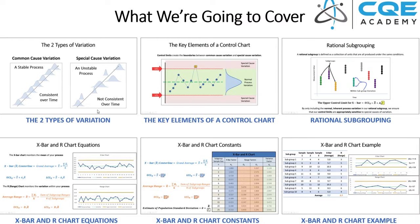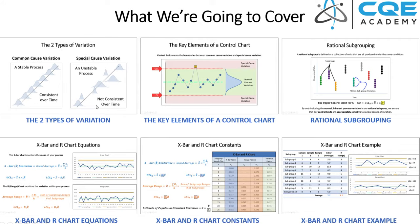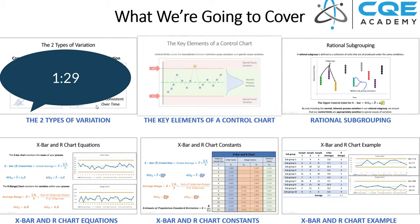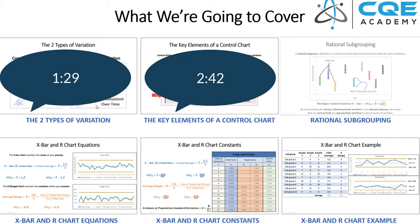Let's go ahead and get into it. What I'm showing here is the agenda for today's lecture. I'm going to start with talking about the two types of variation. The beauty of a control chart is that it helps us distinguish between special and common cause variation — that's exactly why we use them. Then we're briefly going to talk about the key elements of a control chart, those unique features that help us distinguish between normal and special cause variation. And then there's a really important topic called rational subgrouping.